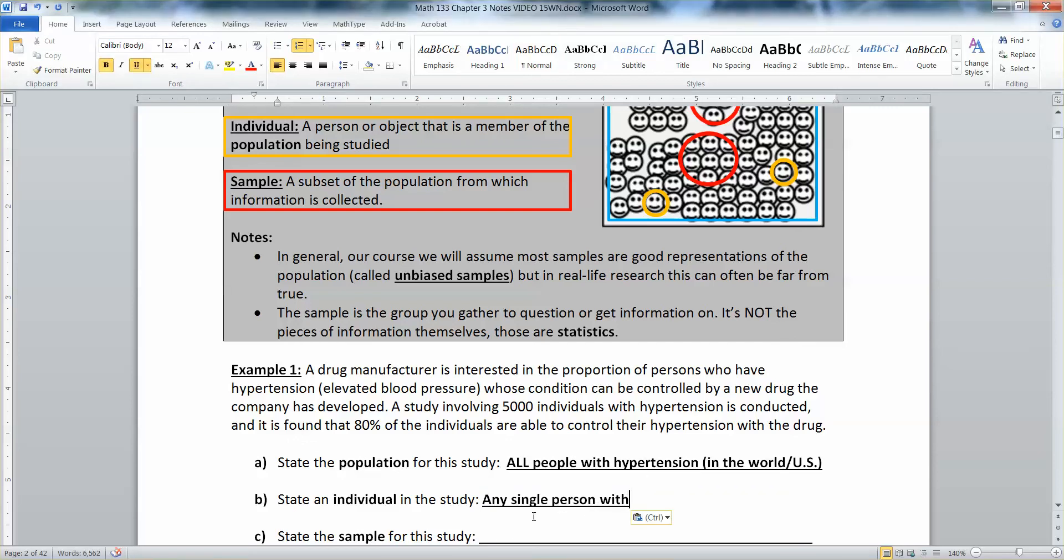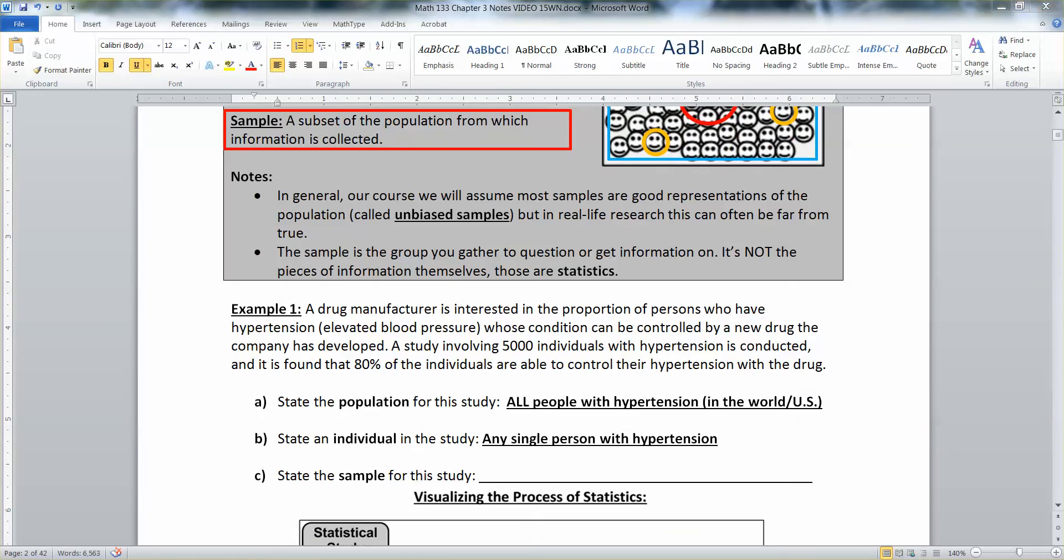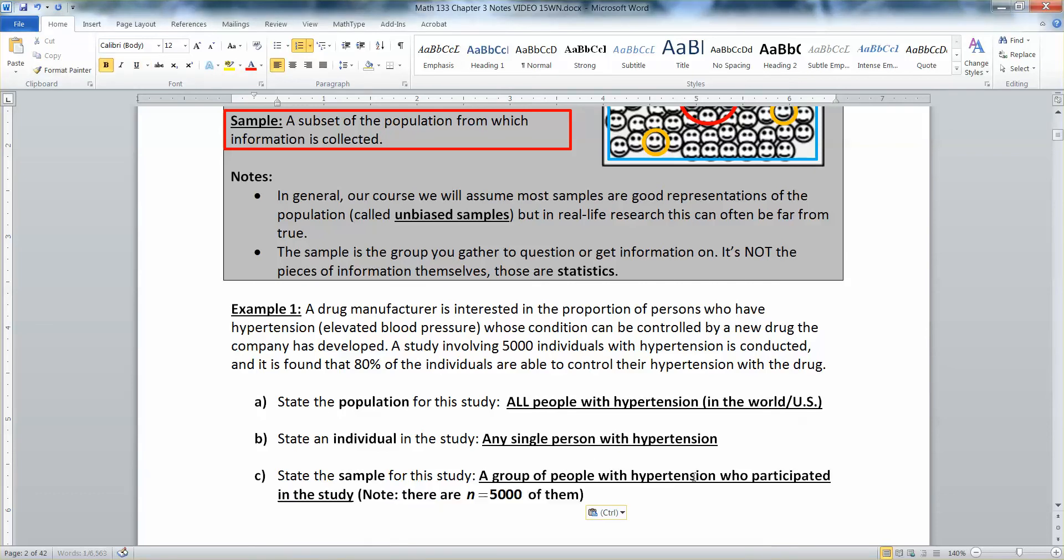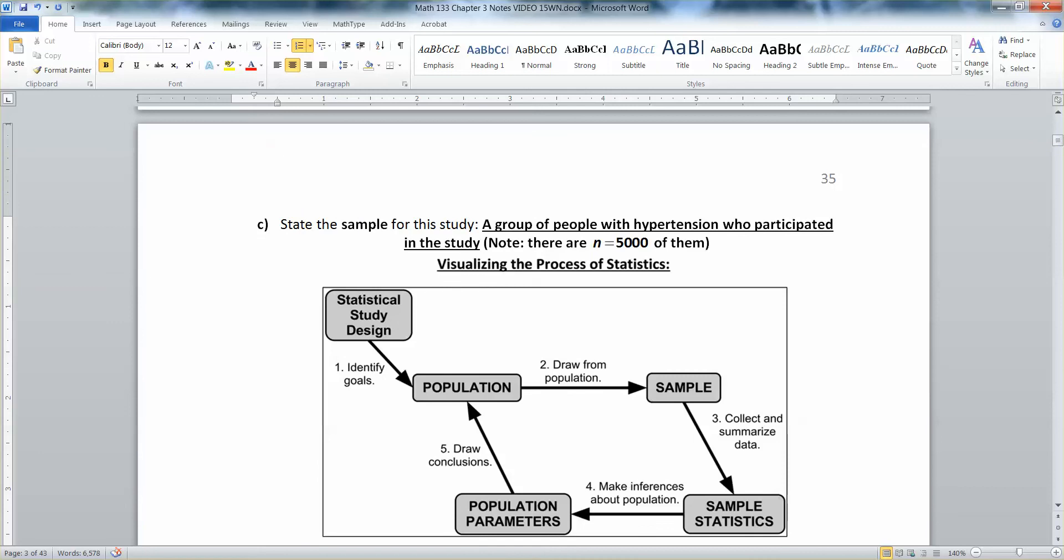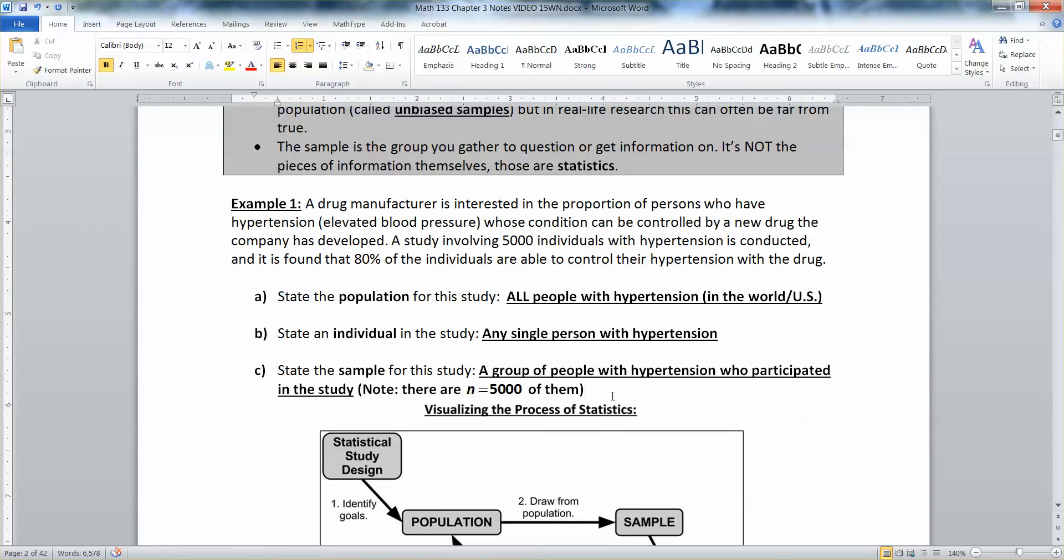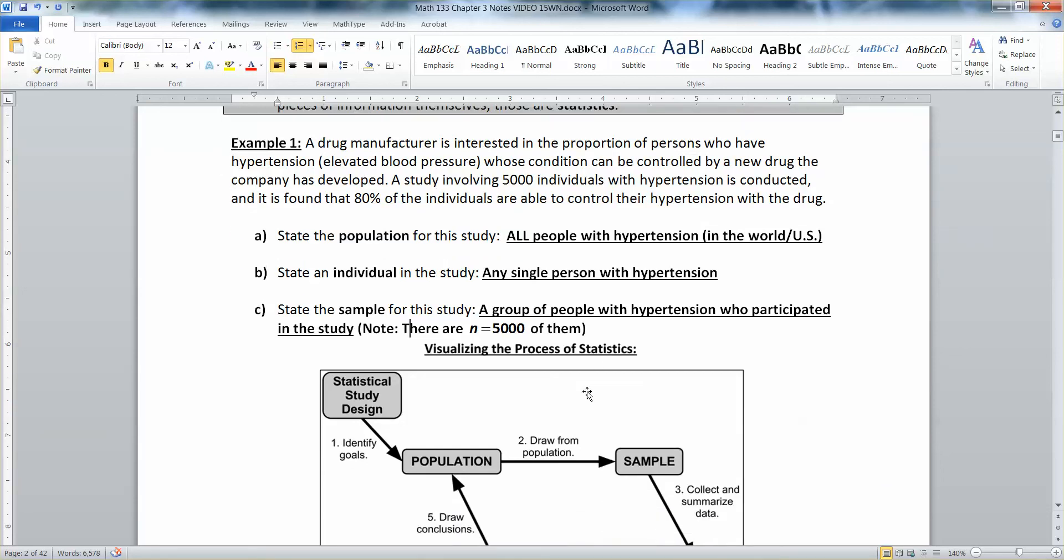And then a sample was that group of people who participated and there were 5,000 of them. The symbol for that, by the way, is going to be N. When we get to it, N is the sample size symbol. So the sample was the group of people with hypertension who participated in the study. And there were N equals 5,000 of them. N is the symbol for sample size, lowercase n for number.